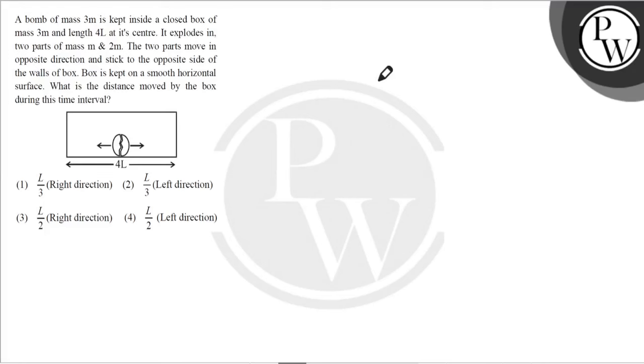Hello, let's read the question. A bomb of mass 3M is kept inside a closed box of mass 3M and length 4L at its center. It explodes into two parts of mass M and 2M. The two parts move in opposite directions and stick to the opposite side walls of the box. The box is kept on a smooth horizontal surface. What is the distance moved by the box during this time interval?